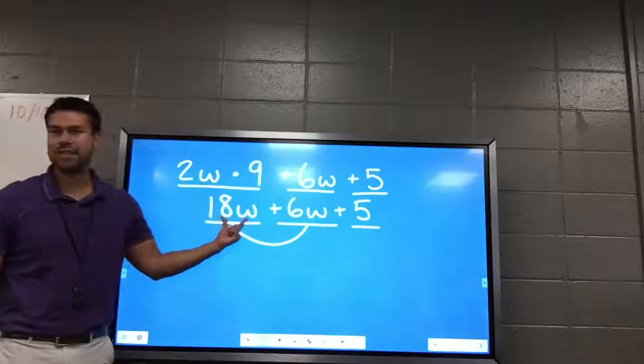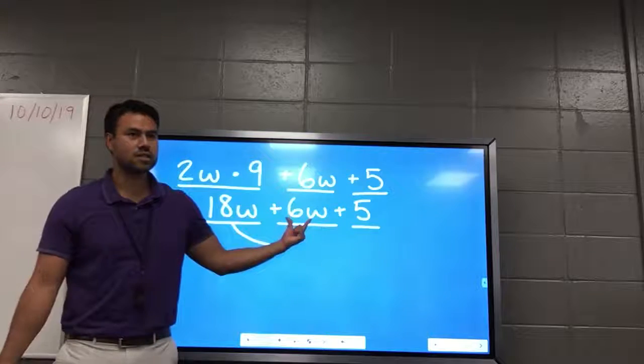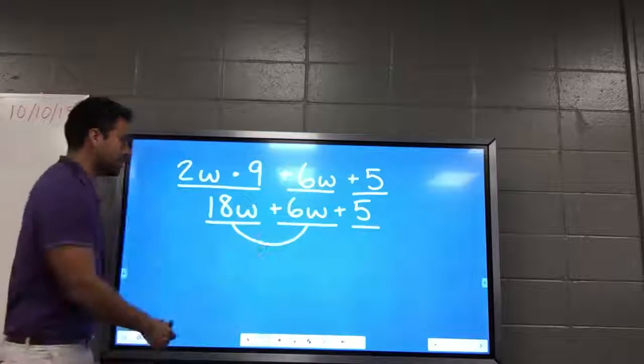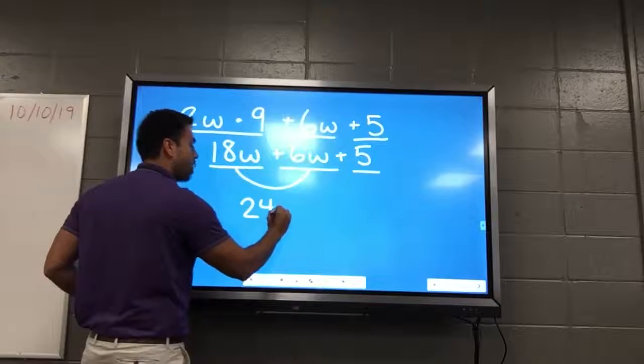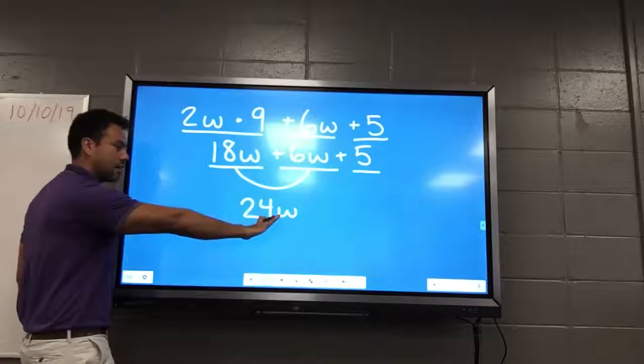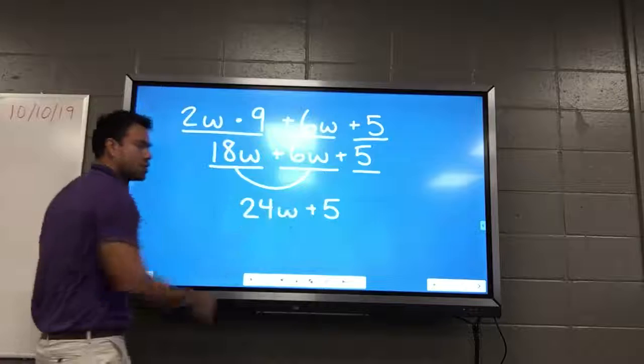So, we have to add the coefficients. What's the coefficient of eighteen W? Everyone? Eighteen. What's the coefficient of six W? Six. So, eighteen plus six? Four. So, I get twenty-four W. W by itself, just like that. Good, good. Five. Plus my five, right? I have two terms left.